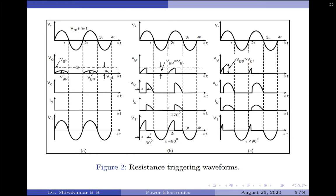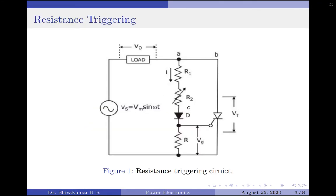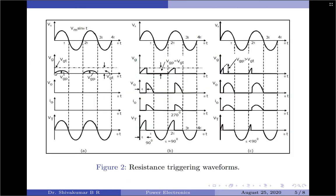Let us analyze each set individually. In the first set of waveforms, the gate peak voltage is less than the gate threshold voltage. This occurs when the value of R2 is very large. When R2 is very large, the time taken by resistor R to build a voltage across the gate terminal of the SCR is also large. Therefore the gate voltage will reach a very small peak value — insufficient to reach the gate threshold voltage. In such a case, the thyristor will never trigger; it simply follows the input voltage and both the load voltage and load current will be zero.